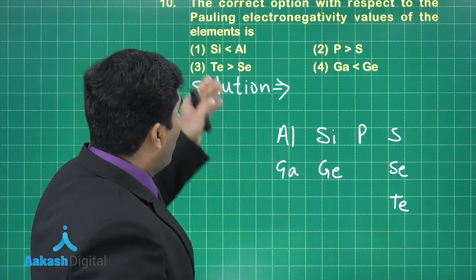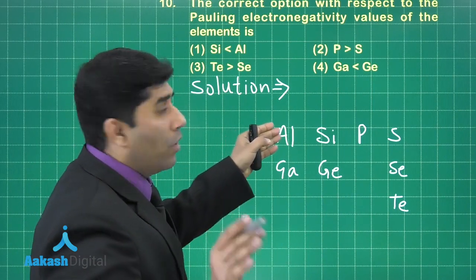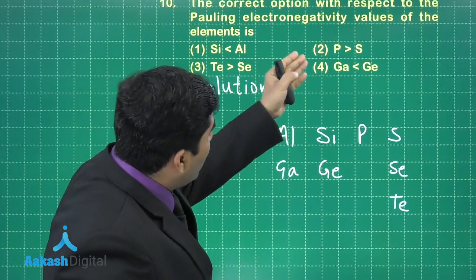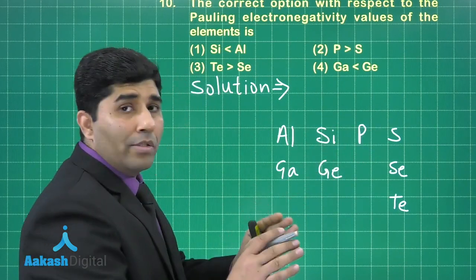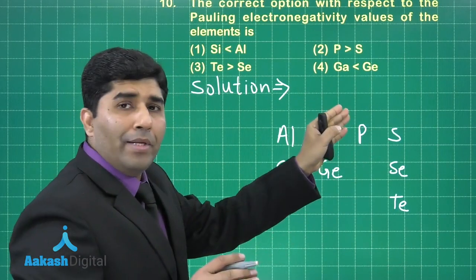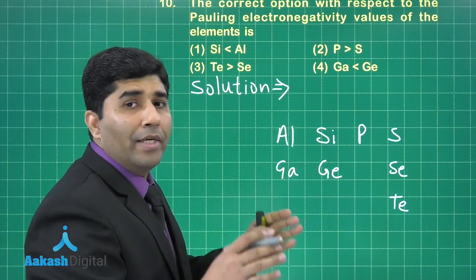First option is electronegativity of silicon less than aluminum - wrong. Second, phosphorus greater than sulfur - wrong. Because as we move across the period the electronegativity increases, as we go down the period the electronegativity decreases.